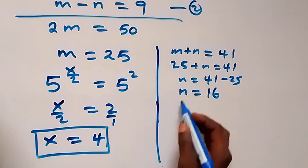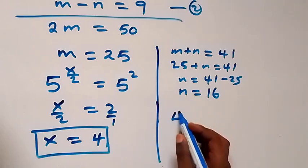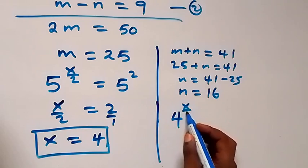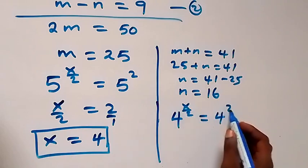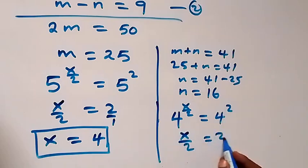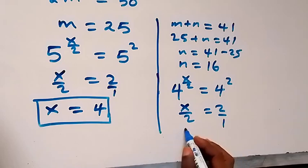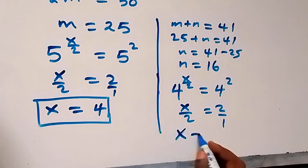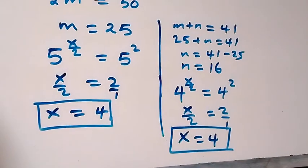Also, n is represented as 4 raised to power x over 2, which equals 16, and 16 equals 4 squared. With the same base, x over 2 equals 2, which again gives us x equals 4.